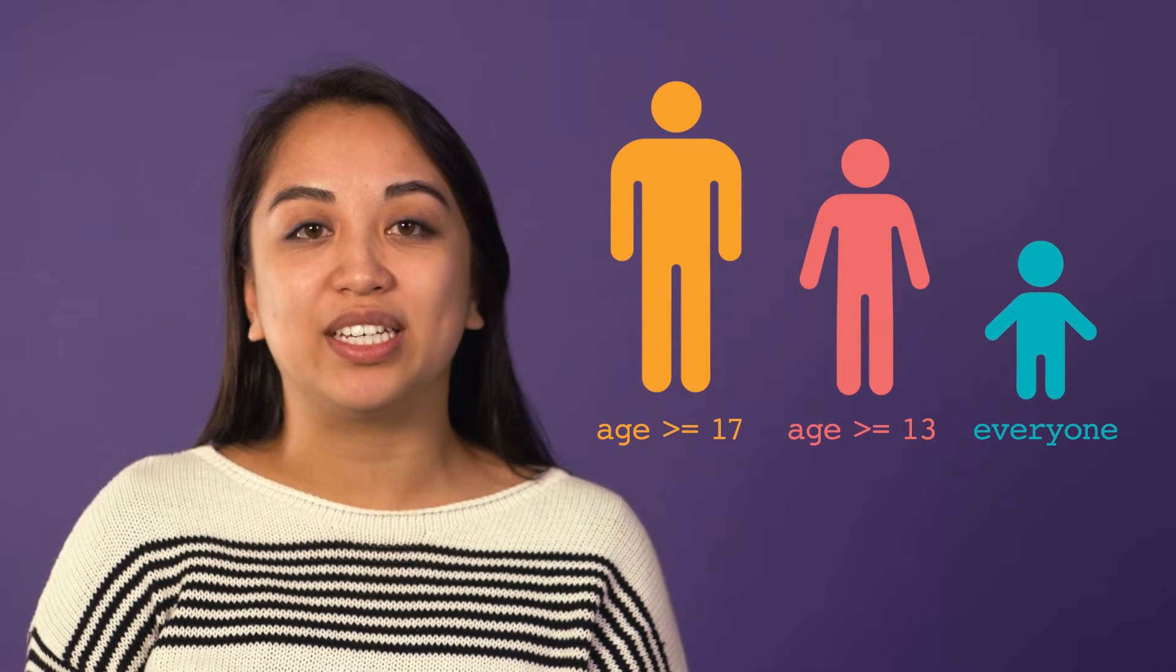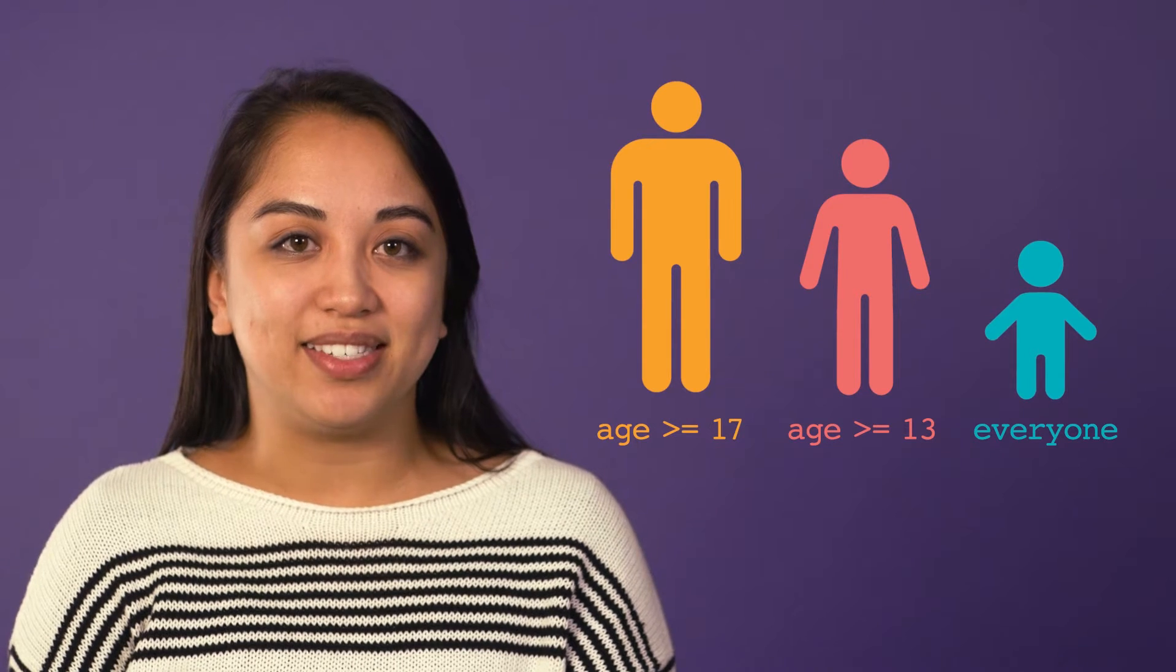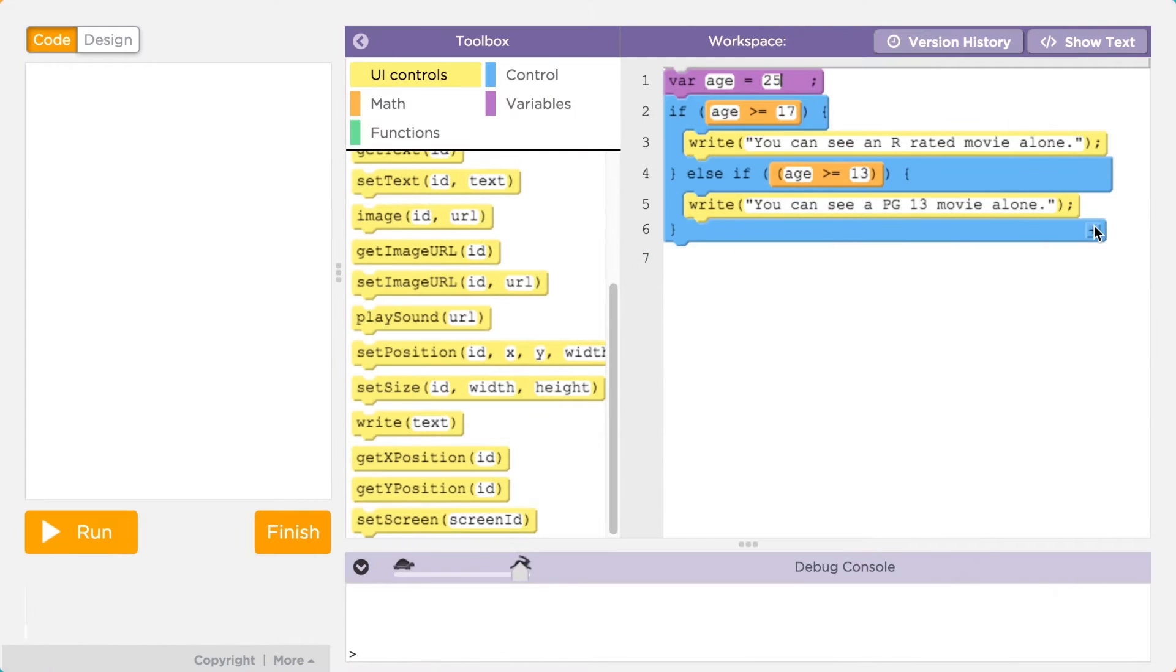To check between these three different cases, we can add an else if statement. An else if statement is another condition that a program checks only if the previous if statements were false.